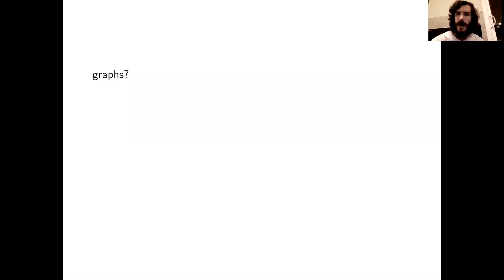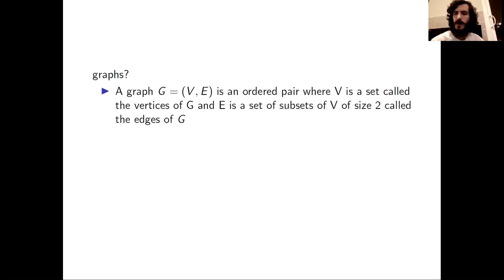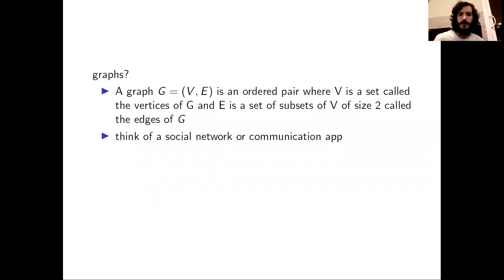How should we think about graphs? Let's start by reviewing the definition of a graph. A graph G equals (V, E) is an ordered pair where V is a set called the vertices of the graph, and E is a set of subsets of V of size 2, and these are called the edges of the graph. For example, we can think of a social network or some kind of communication app.